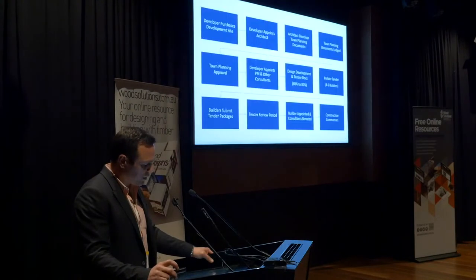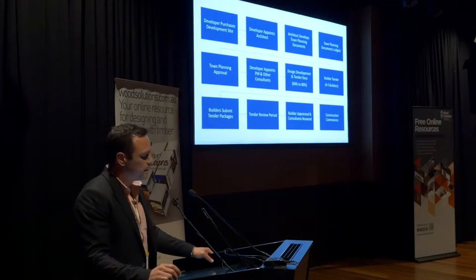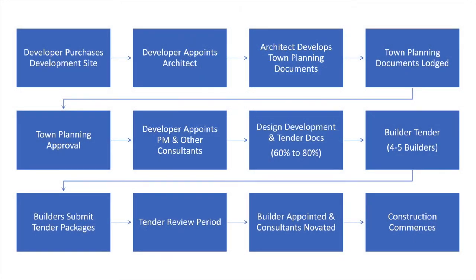So let's focus on the current default setting. I've tried to summarise it simply in a table. Working through each stage: a developer purchases a development site, appoints an architect, the architect develops town planning documents, those documents are lodged and approved. That approval stage probably takes a bit longer and ends up at VCAT with a bit of argument, but eventually they get approved.